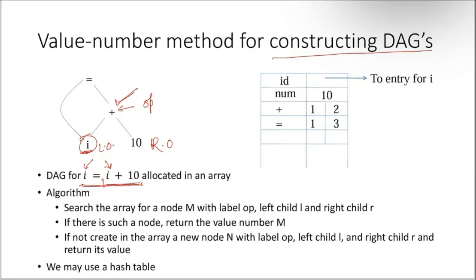If you want to store this DAG in the form of a data structure — you want to store it because when the program is going to be executed, you need to allocate memory. Memory allocation is one part of the runtime environment. In the runtime environment, the memory space has different segments: heap, stack, and other segments. In the stack you have to allocate memory, and you need to follow some data structure there. The stack can be maintained in an array.